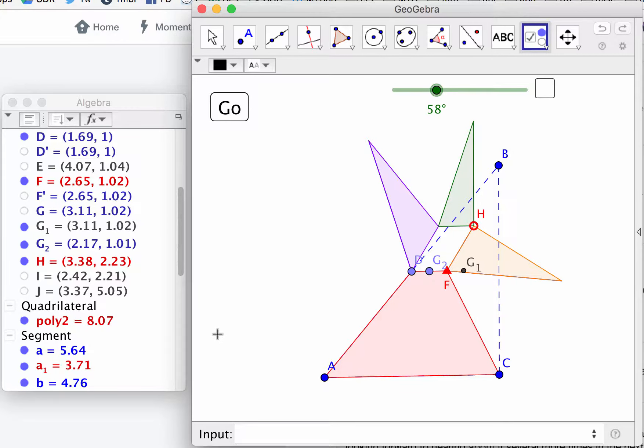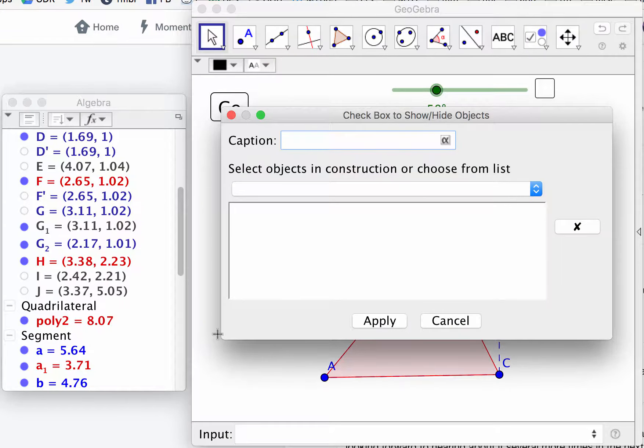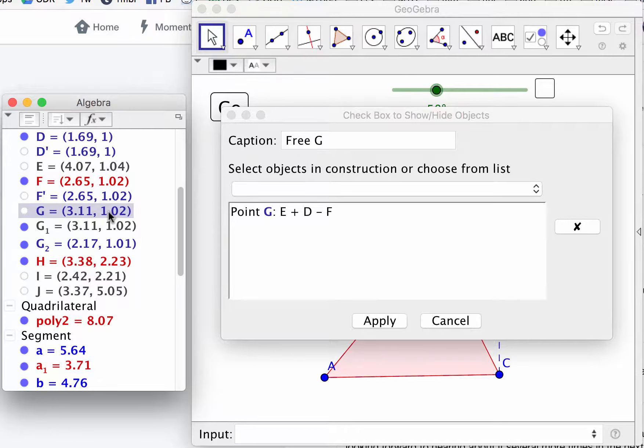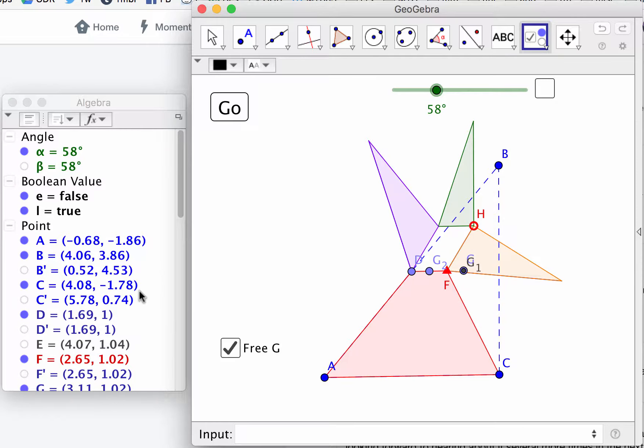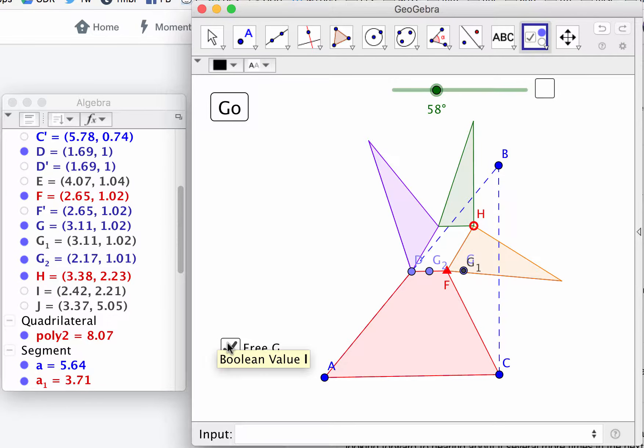So I'm going to make a checkbox, and when that checkbox is checked, free G. So I do want it to show G when it's free. Okay, and that Boolean is L. I wish it was a serif font so we could see these things more easily.